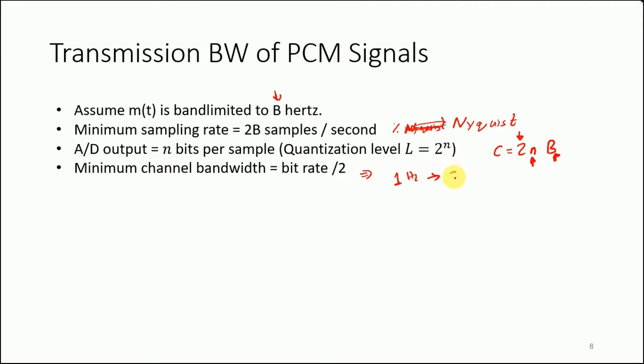The transmission bandwidth, that is the bandwidth of the PCM signal under strict constraints, is BT = nB. This means that you divide C by 2 to get BT. Instead of having 2nB, now you have nB.